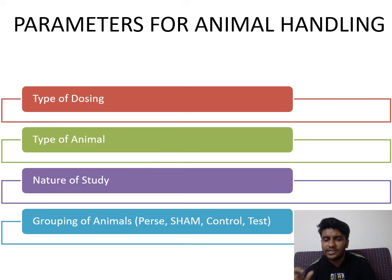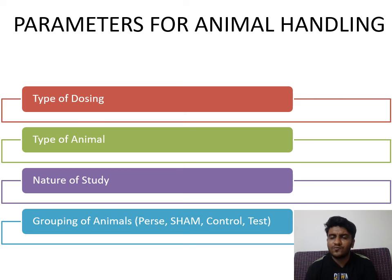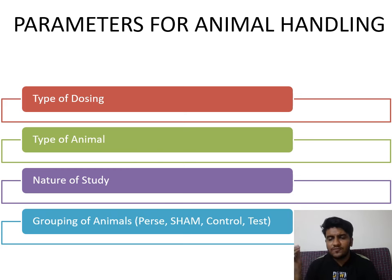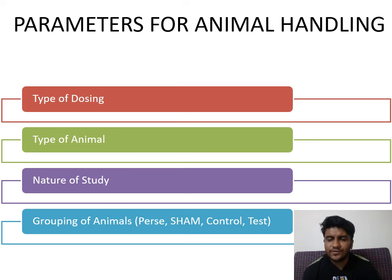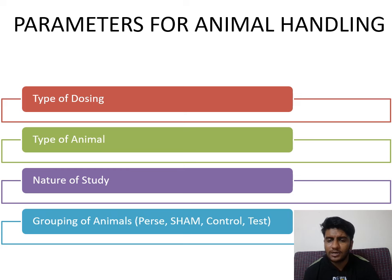The nature of the study is also important — is it prolonged or short-term? There are various OECD guidelines — Organization for Economic Co-operation and Development — numbered 401 through 9, plus guideline 420 for fixed dose procedures. Different guidelines exist for different toxicity testing. You need to know whether it is a pharmacological data generation study, toxicological data, toxicokinetics, or DMPK studies.